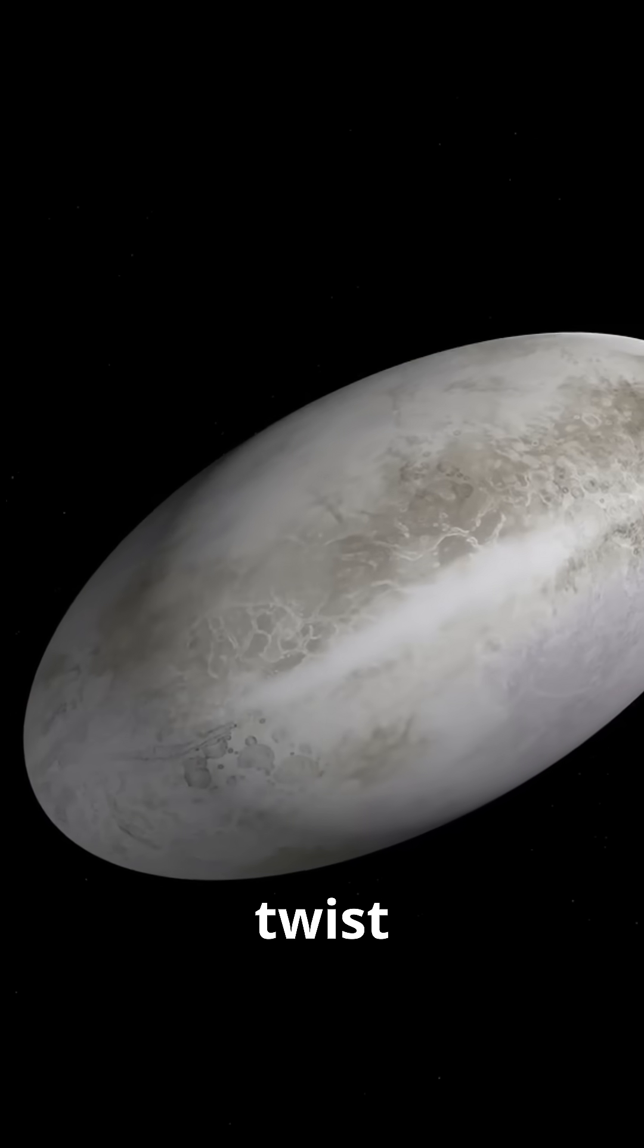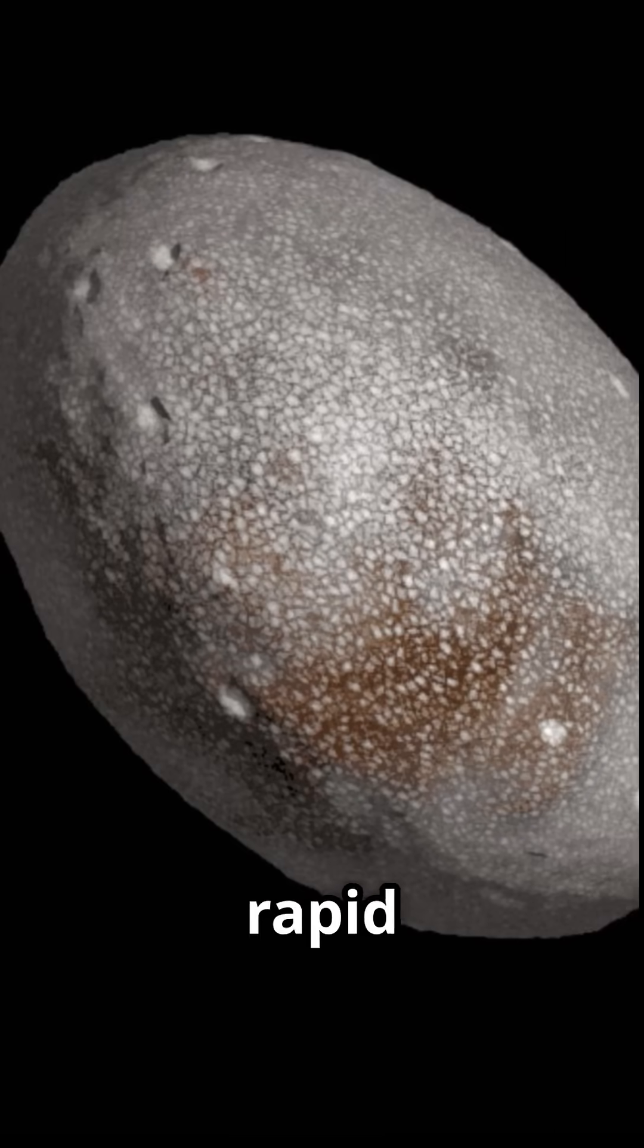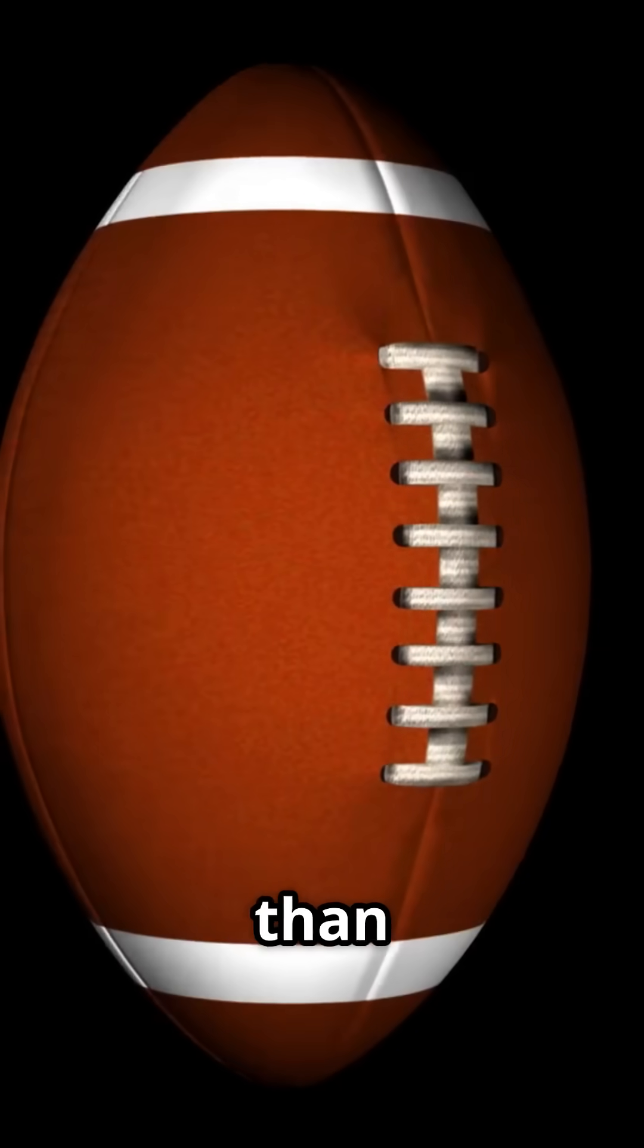Here's the twist. Haumea spins so fast it completes a rotation in just under four hours. This rapid spin stretches it into an elongated shape, making it look more like a football than a sphere.